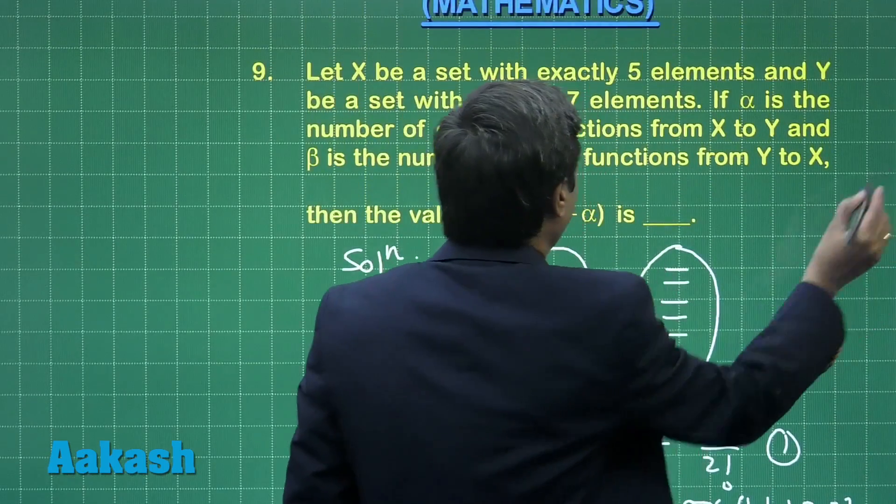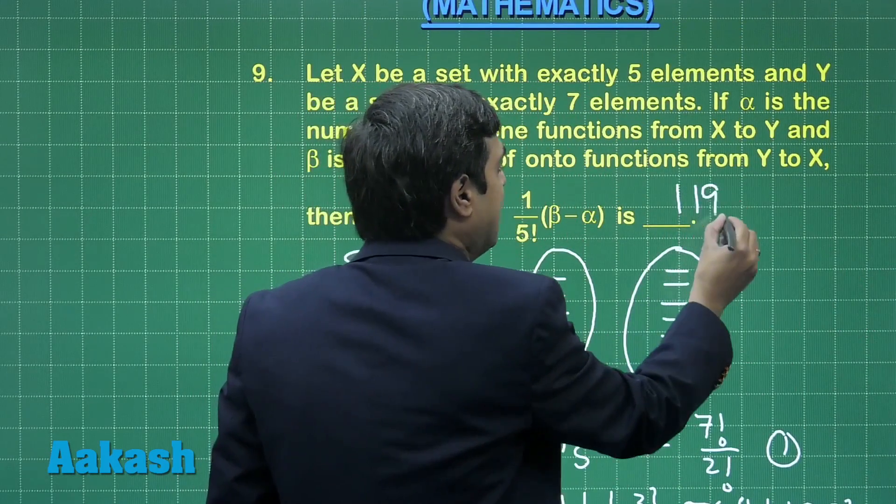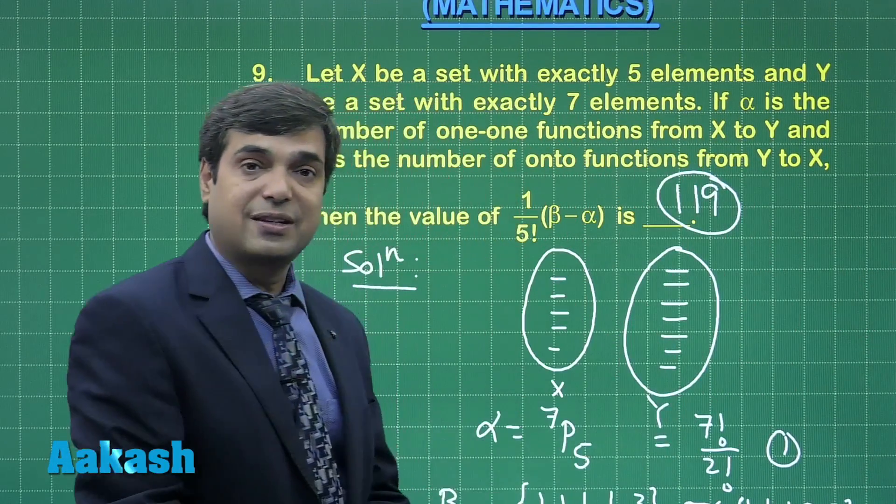Calculate the value for beta and alpha to get the result as 119. We get the answer for this question as 119.